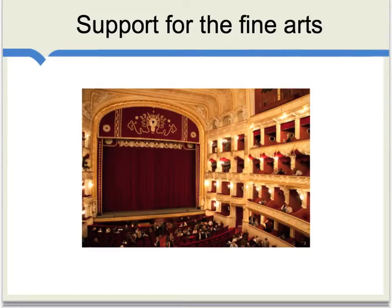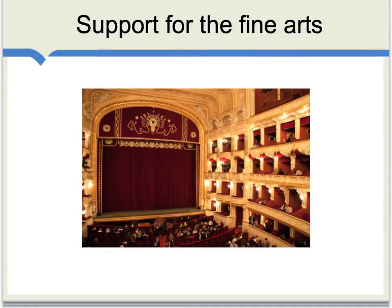Bastiat considers another example: government support for the fine arts. Everyone can see that government support leads to more opera companies, more open theaters, more concerts and many other activities. But does this mean it's a good thing? That is the seen. Bastiat stresses the opportunity cost — the unseen alternatives to having government support the fine arts or other public works. He doesn't pretend to offer a final comparison, but he notes that we as observers tend to overvalue what we see and undervalue the opportunity cost, and that there is a plausible argument for having funds allocated in accord with consumer preferences rather than the preferences of the taxing authority.